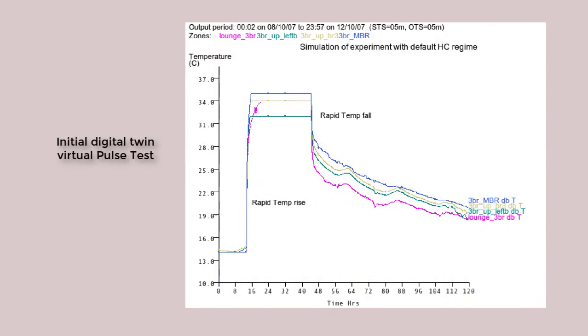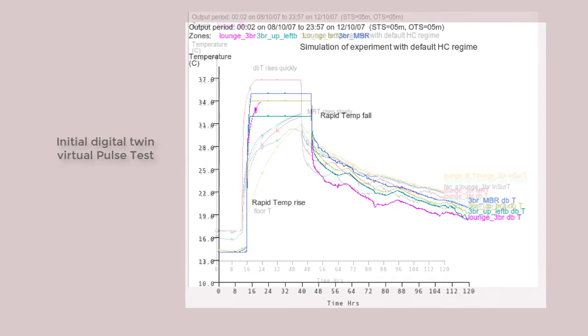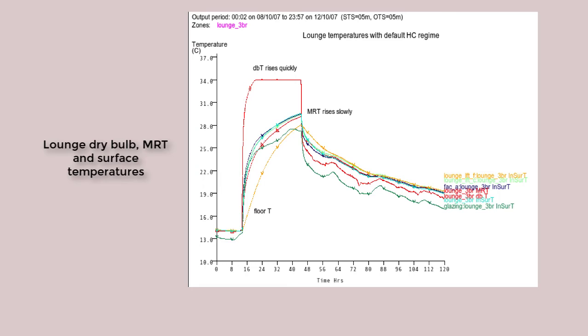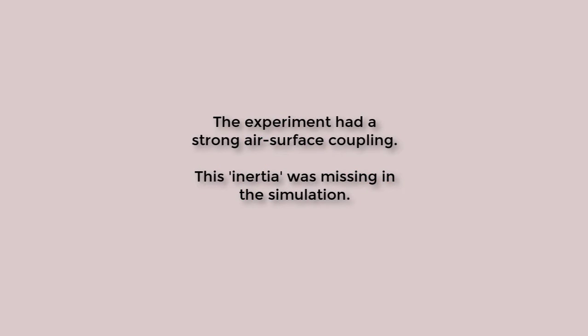When we run the experiment, we get a different story. The air temperature rises very quickly. Looking at the lounge during the warm-up phase of the test, the surface temperatures clearly lag that of the room air temperature, and there is considerable difference between the MRT and the air temperature. It fails to capture the inertia observed in the experiment.